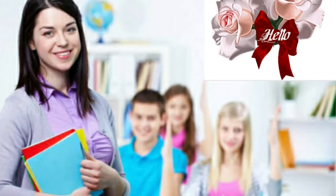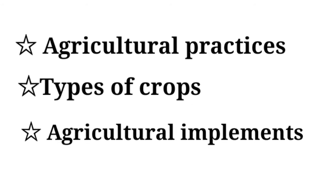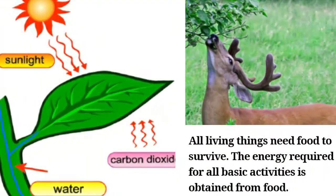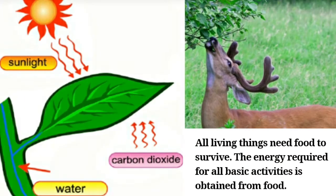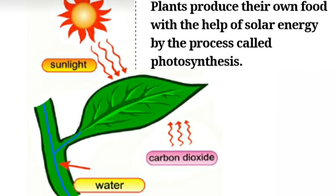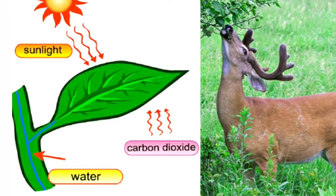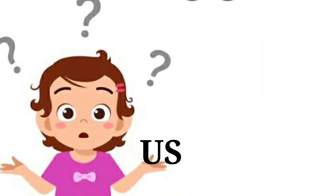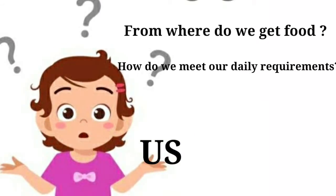In this video we shall discuss agricultural practices, types of crops, and agricultural implements from the lesson crop production and management. As we know, all living organisms like green plants and animals need food for survival. Green plants prepare their own food by the process of photosynthesis, while animals obtain food directly or indirectly from plants. So what about humans — where do humans get their food from?